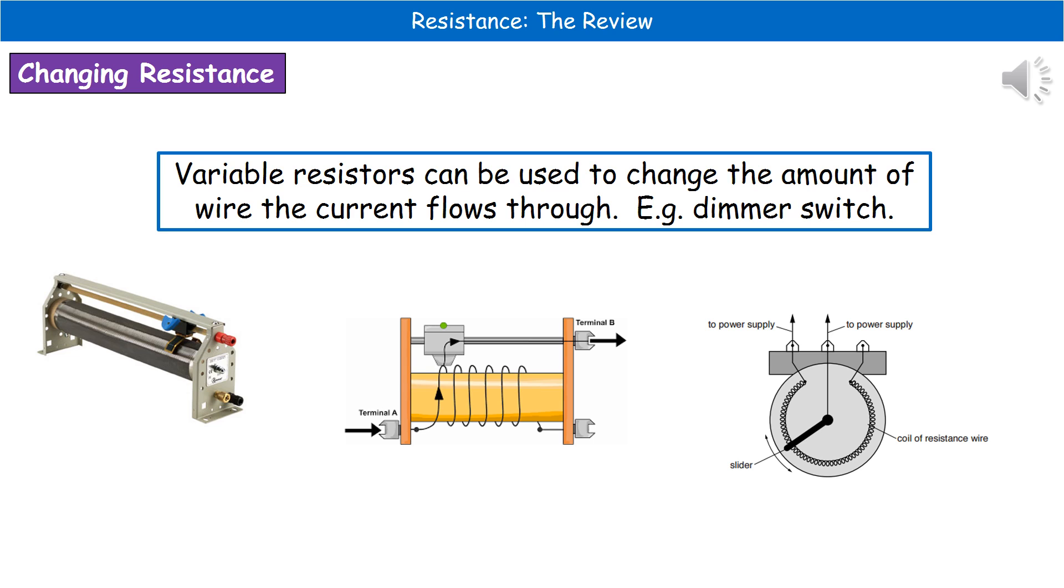The principle is the same. The more of the coil that the actual current flows through, the greater the resistance will be. If you were to get a question asking how you could reduce the resistance or increase the current, then we'd say move the slider. You've got to be a little bit specific. You've got to say whether it's clockwise or anti-clockwise. In this case, if we're reducing our resistance, then we want it to flow through a smaller amount of the wire. So we'd move the slider in a clockwise direction.